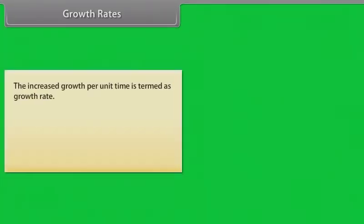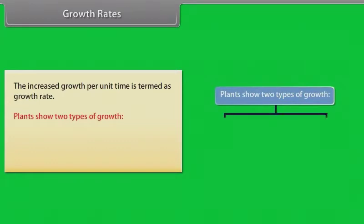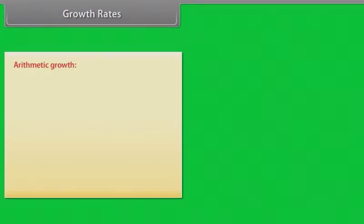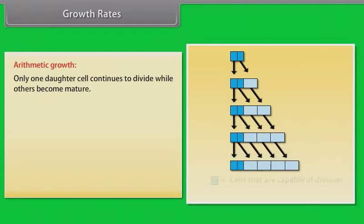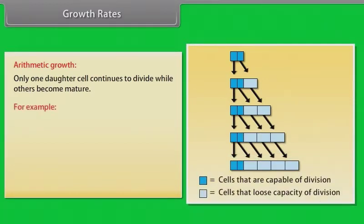Growth rates. The increased growth per unit time is termed as growth rate. Plants show two types of growth: arithmetic and geometric. Arithmetic growth: only one daughter cell continues to divide while others become mature. For example, root elongating at a constant rate.